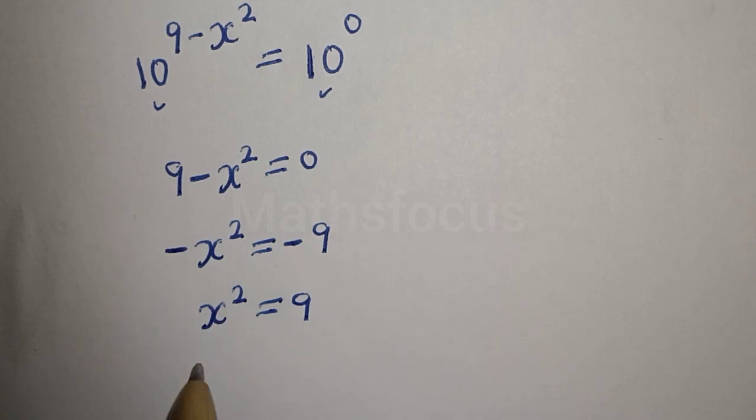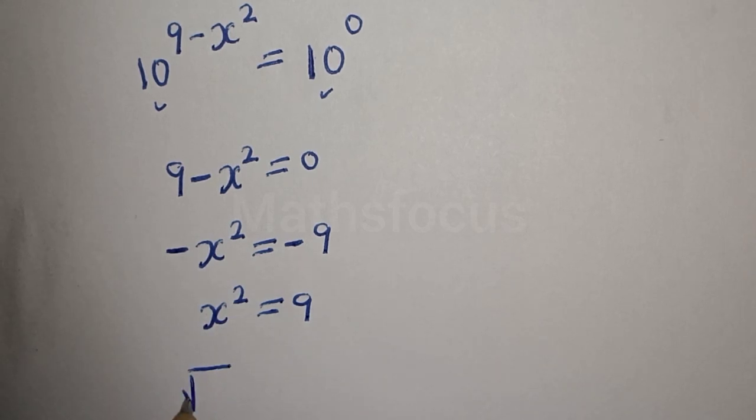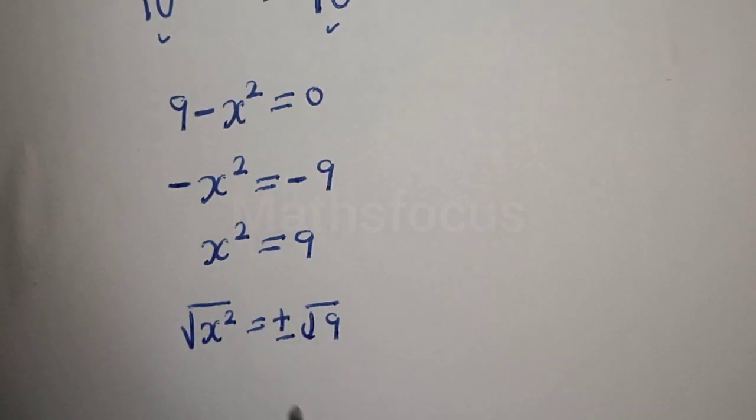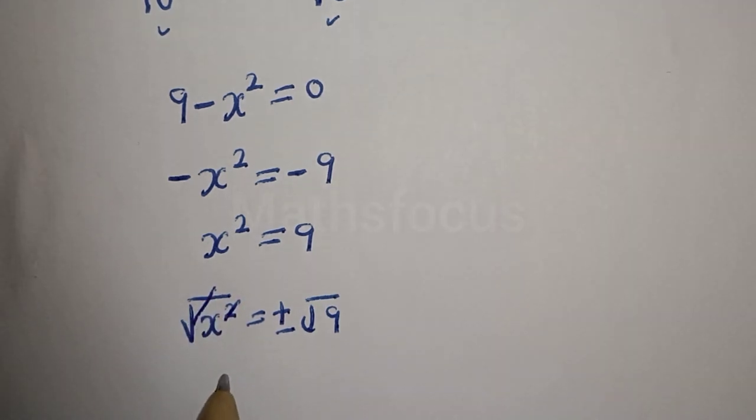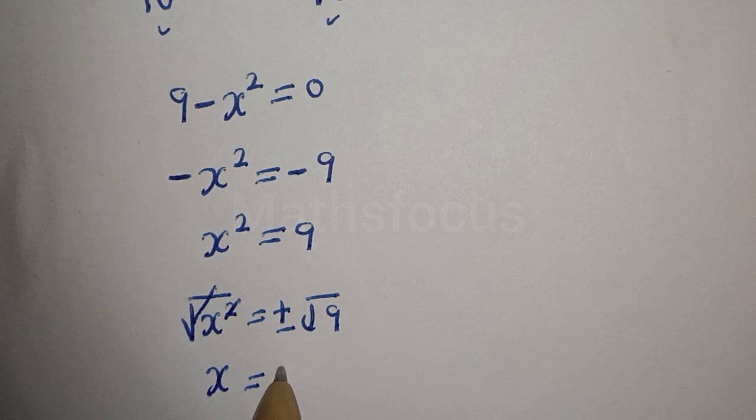Let's take the square root of both sides. Square root of x squared is equal to plus or minus square root of 9. This will cancel this. x is equal to plus or minus 3.